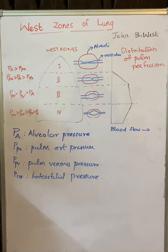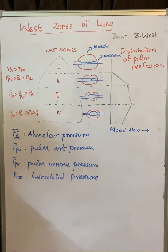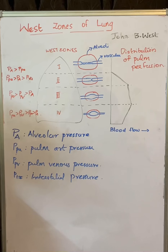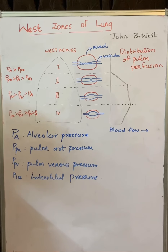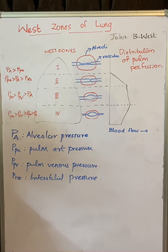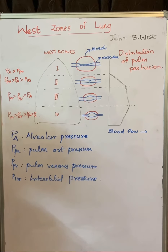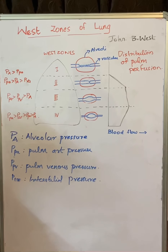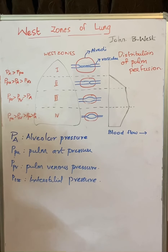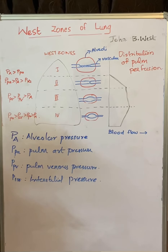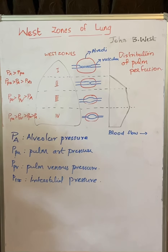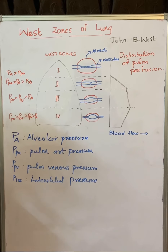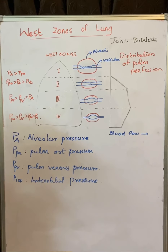Hello friends, welcome to medicine classes for Dhammas. Today we will be discussing about the West Zones of Lungs. These West Zones were described by John B. West, who divided the lungs into four zones: Zone 1, 2, 3, and 4.